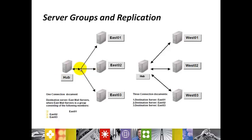So this one connection document - the destination server is east mail server, where the east mail server is a group consisting of the following members: east 1, 2, and 3. So we have created one connection document for all these three databases.